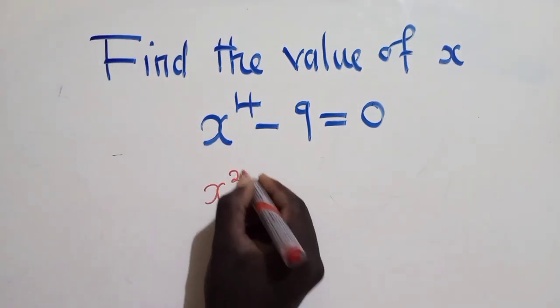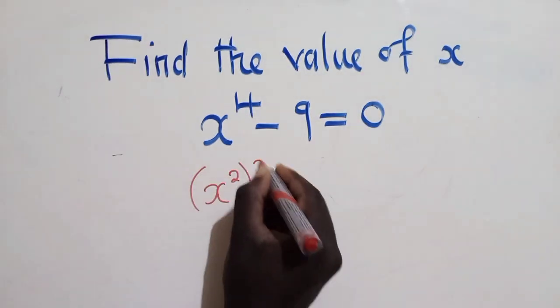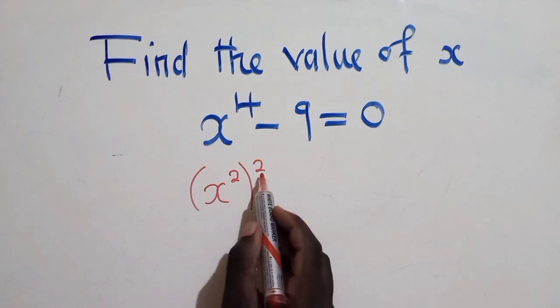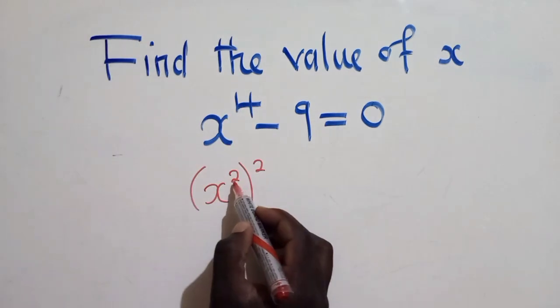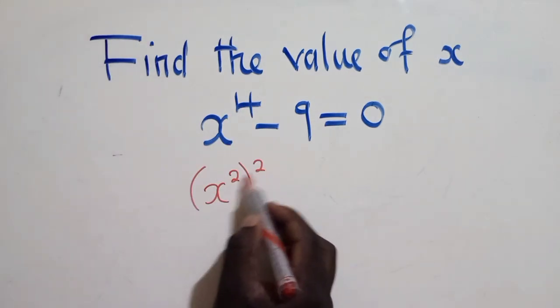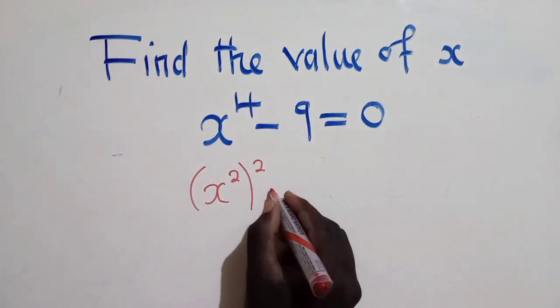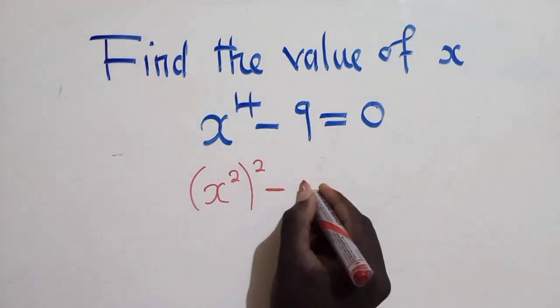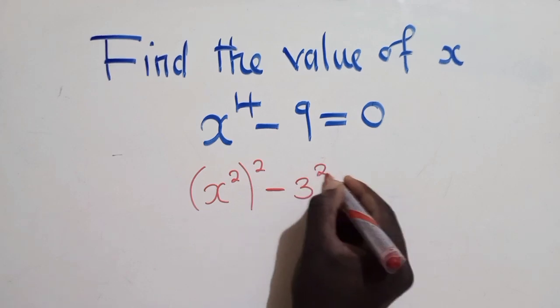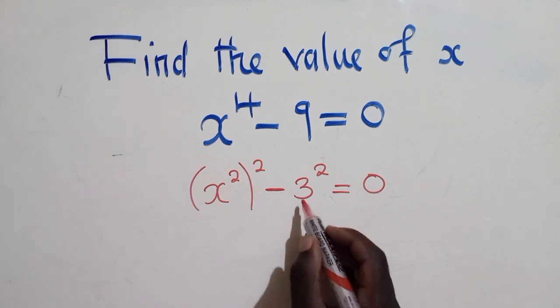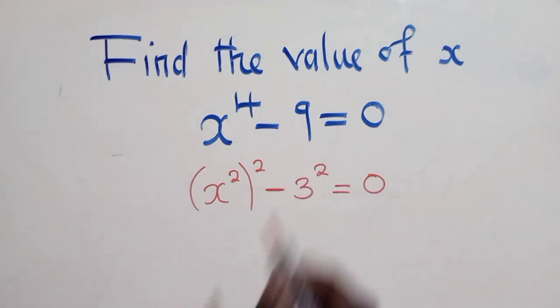It will look like this. x power 2 and a power 2 here. The laws of indices. When you've got something like this, this power and this one can be multiplied and you get what is right here. And then we shall say minus 3 power 2, which is equal to 0. 3 power 2 is the same as 9.